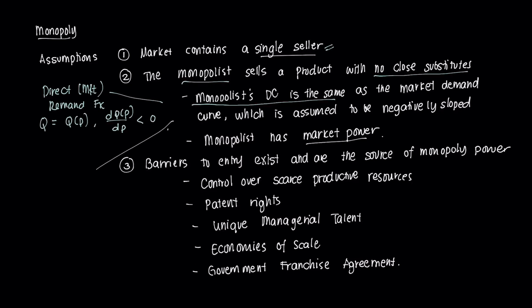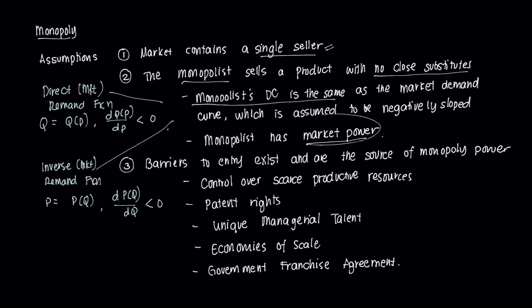We also have what we call our inverse market demand function, and that one is P as some function of Q. We can also infer that if we take the derivative of that with respect to Q, that's also less than zero. We're going to discuss more into these two demand functions later in the video. Another thing that we're going to emphasize is that a monopolist has market power, and we're going to get into that in the subsequent videos.